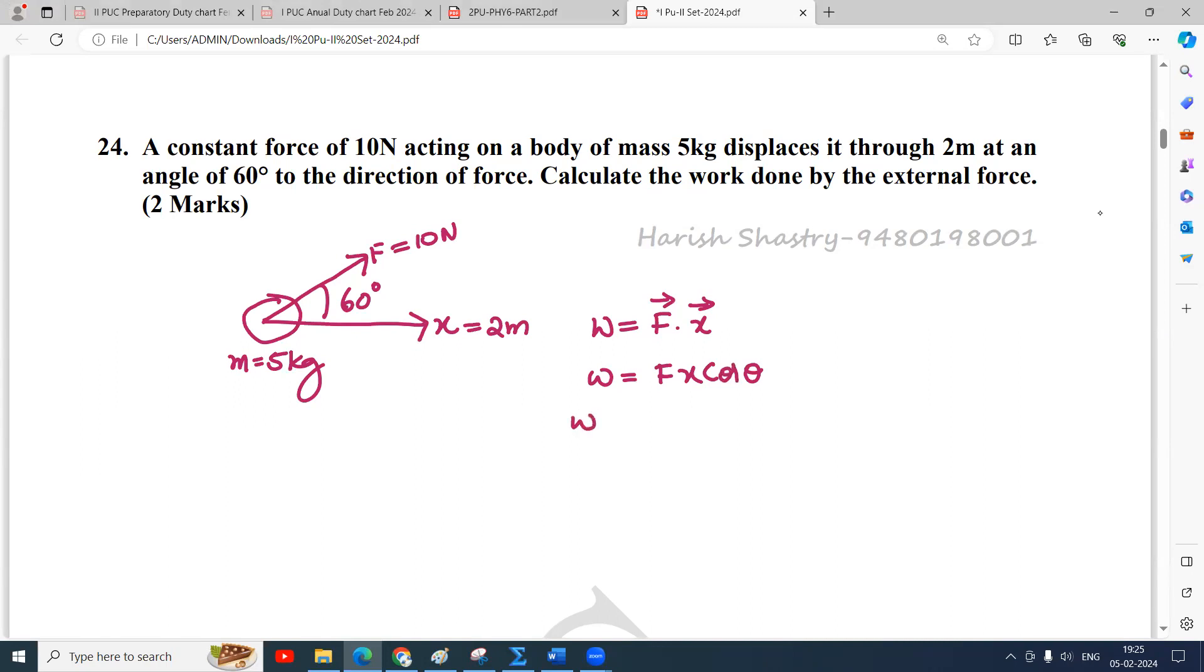So, W is equal to, force is 10 Newton. It is a constant force. X is 2 meters. Cos theta is cos 60 degrees. Yeah, cos 60 degrees. W is equal to 20 into cos 60 is half. That is 10 joules.